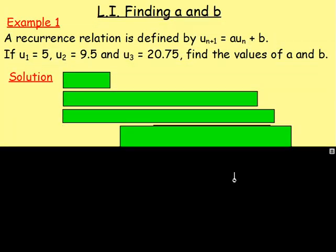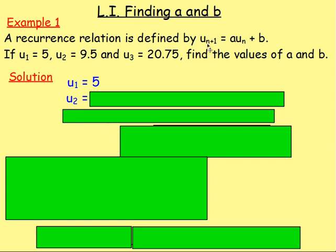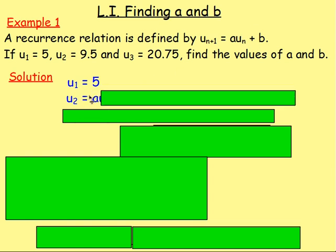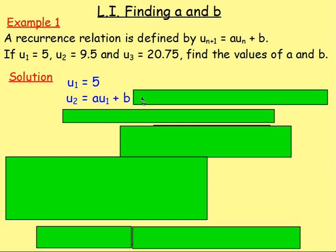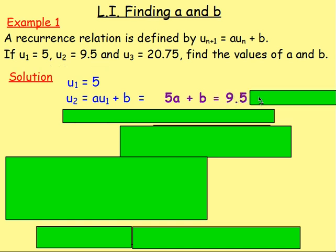So to do this, what you want to think about is these terms that you have. We already know that U1 equals 5. If you wanted to work out U2, you would do A times the previous term plus B — so A times U1 plus B. We know U1 is 5, so that becomes 5A plus B. And that equals U2, which is 9.5.